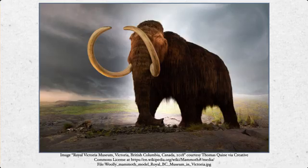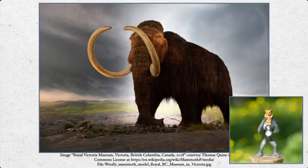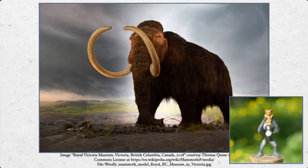The woolly mammoth is inarguably the most famous of all these elephantine species from back in the day. This is a still of a pretty famous display in the Royal Victoria Museum, and whenever I see this there's only one thing I can think of — you can't tell me that doesn't look like Simba getting held over a rock. It always reminds me of that chant from the beginning of The Lion King.